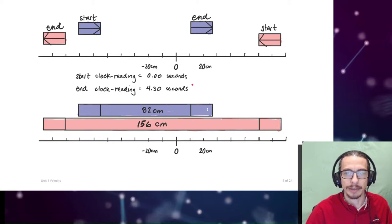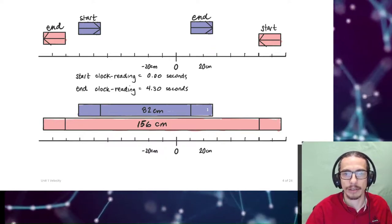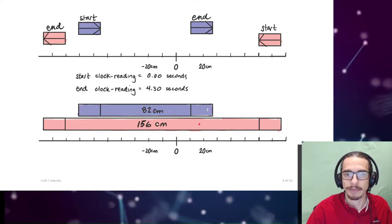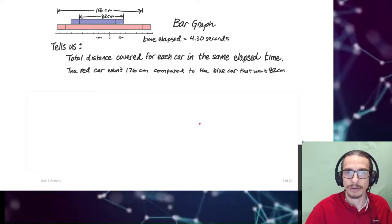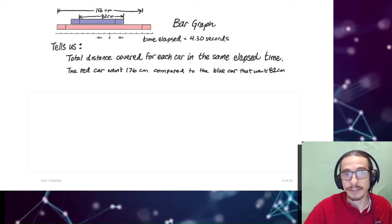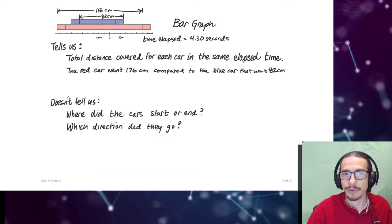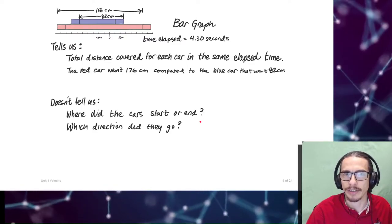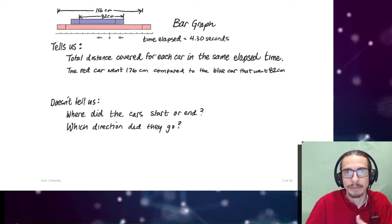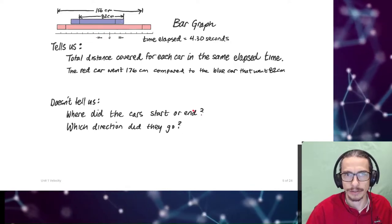Some of you created a bar graph showing the distance traveled by each car — 82 centimeters for the blue car and 156 centimeters for the red car. This bar graph tells us the total distance covered by each car in the same elapsed time, which is great. However, looking at it later, you wouldn't know where each car started or ended, or which direction it traveled — you'd need to refer back to the written description. We need a graph that can tell us all of those things.